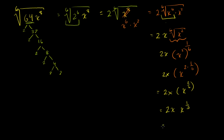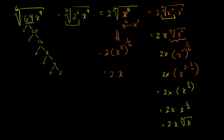In radical form, this can be written as 2x times the third root of x. Alternatively, going back to the sixth root of 64 times x to the eighth, we could write this as 2 times x to the eighth to the one-sixth power, which equals 2 times x to the 8-sixths, or x to the 4-thirds. This is completely equivalent: 2 times x to the first times x to the one-third gives x to the 4-thirds when you add 1 and one-third.